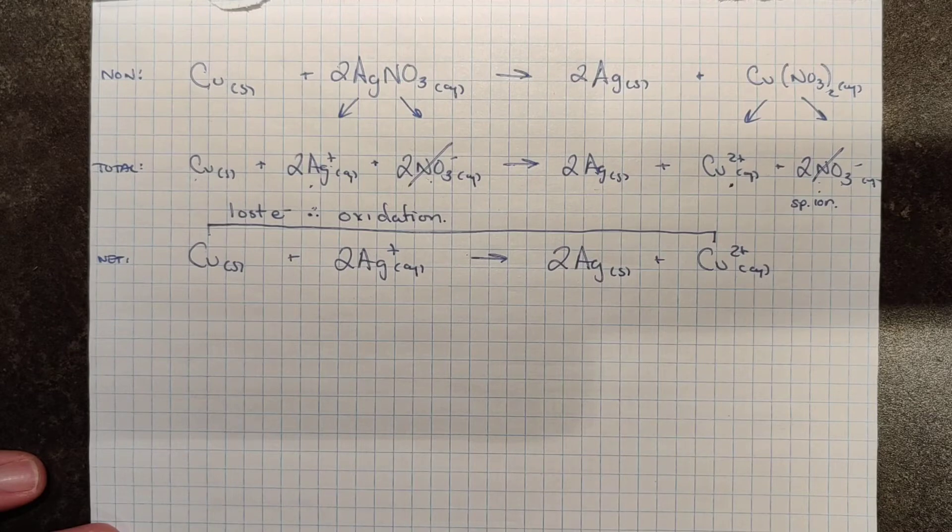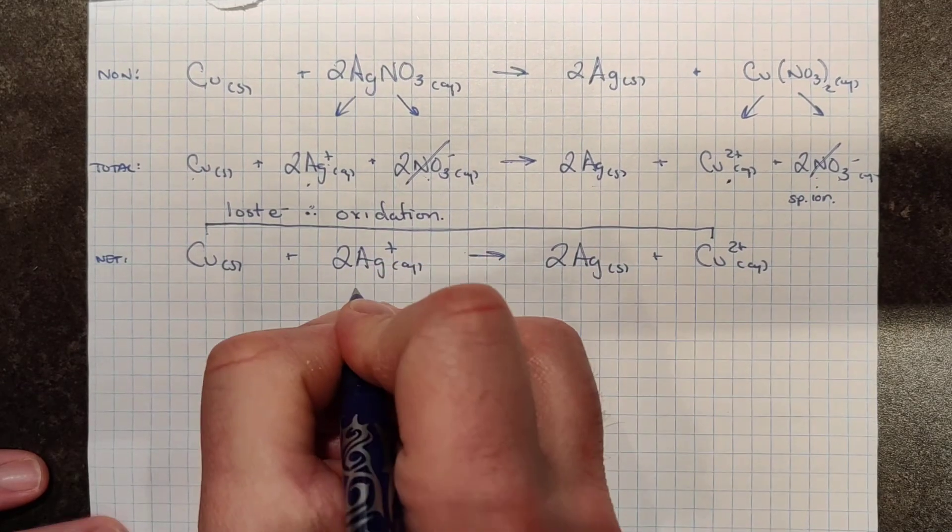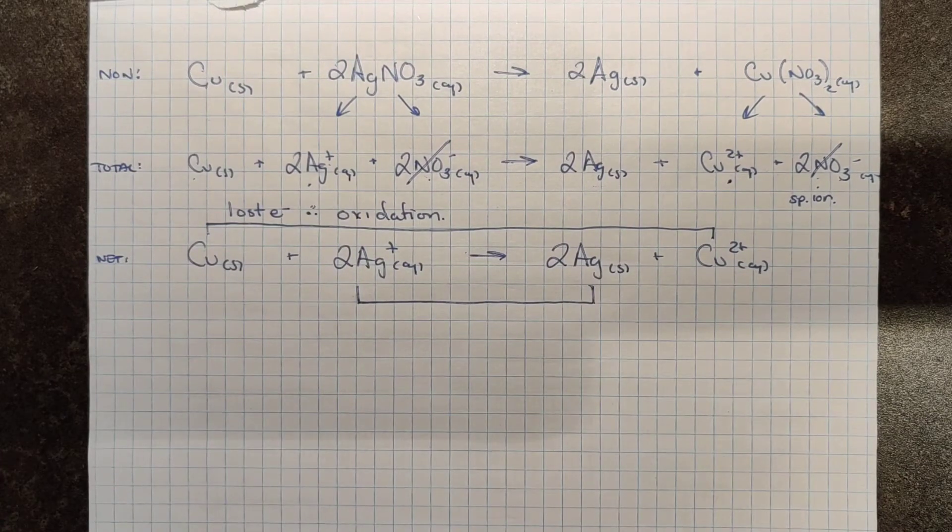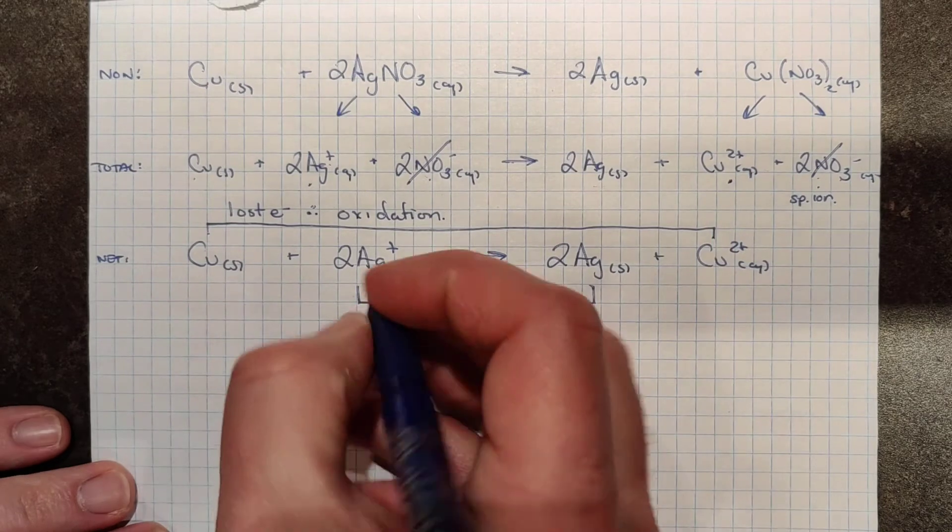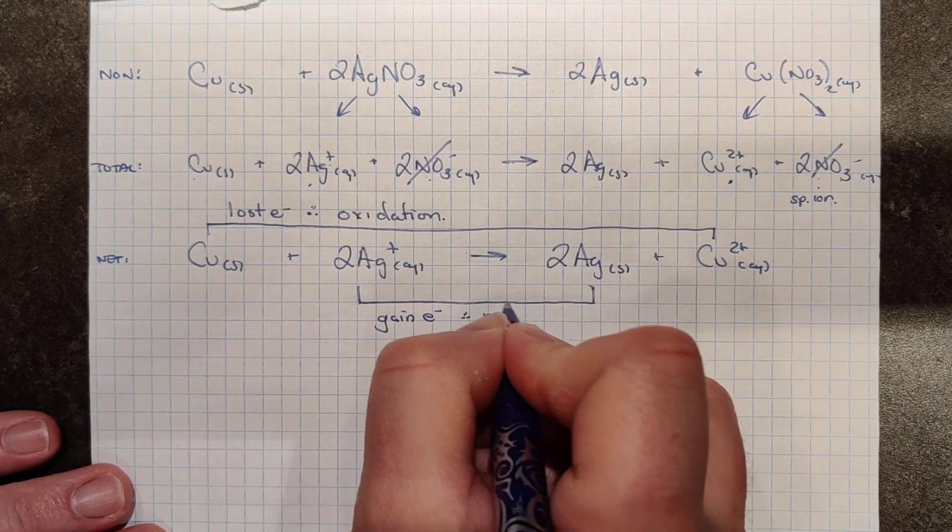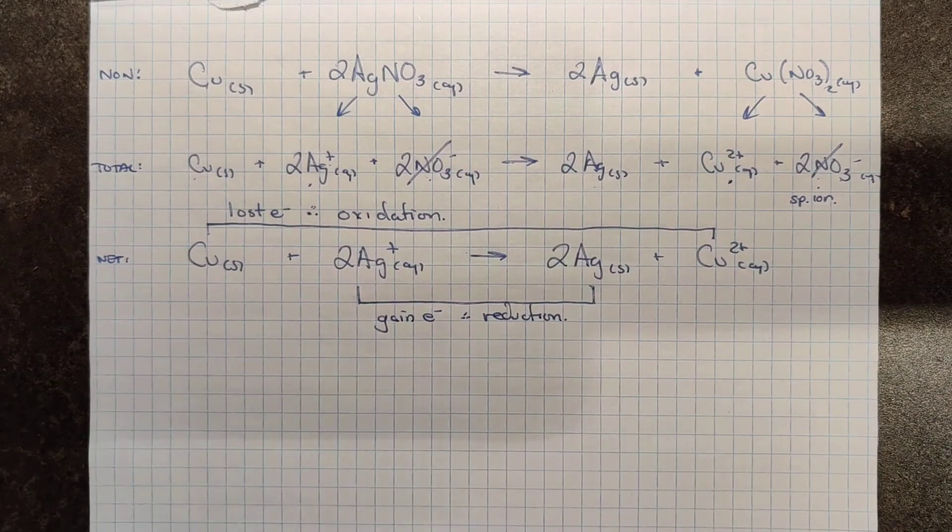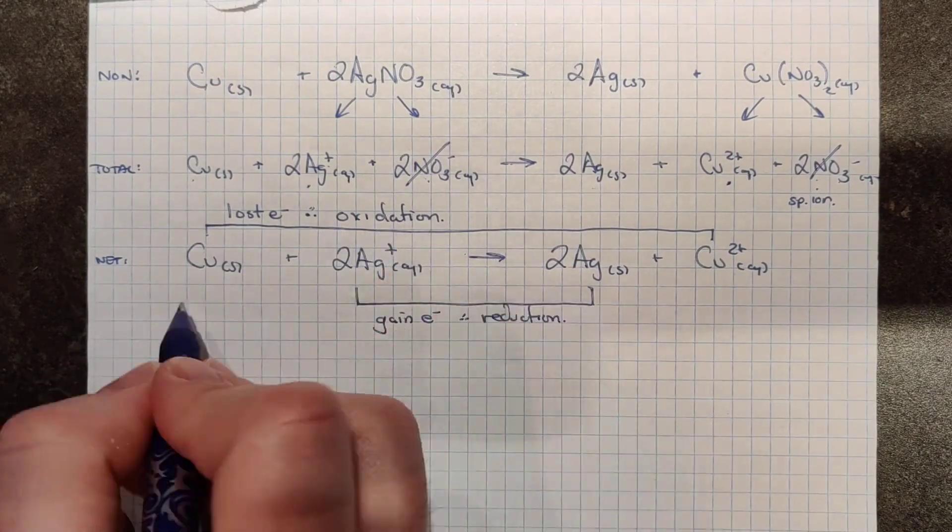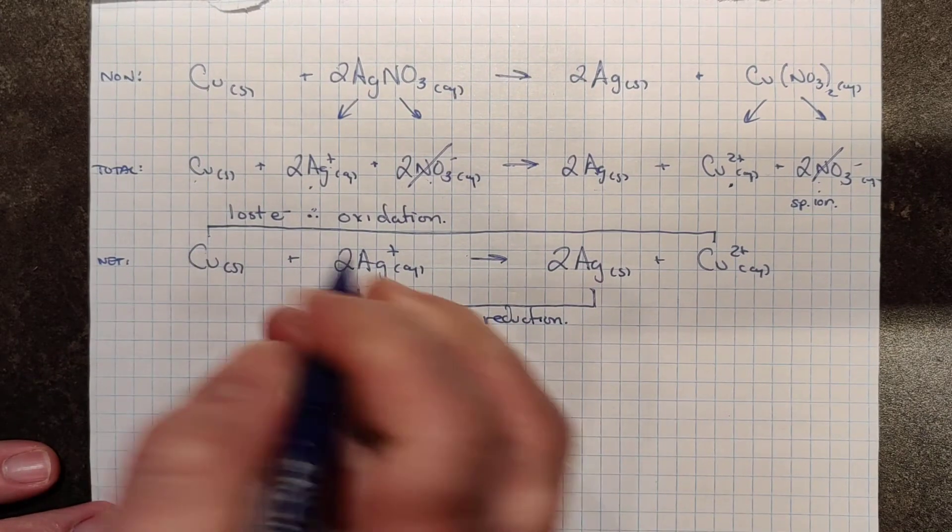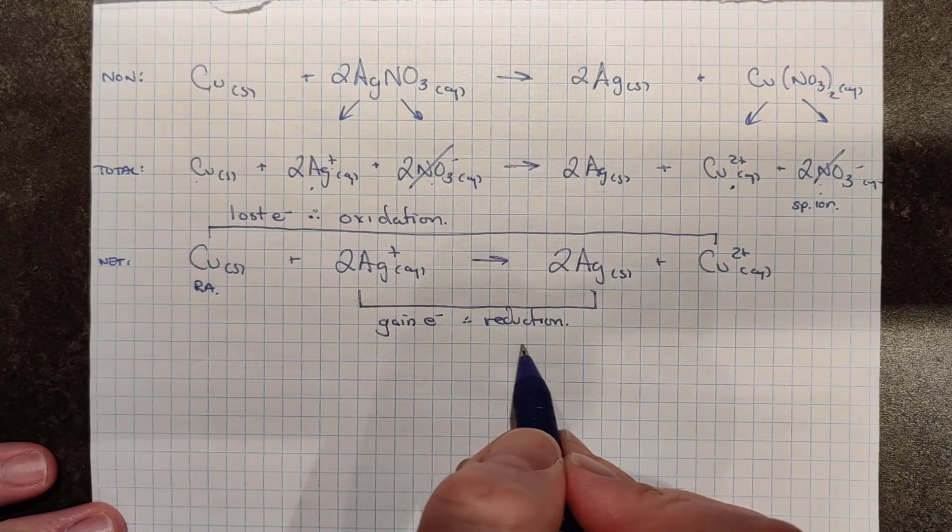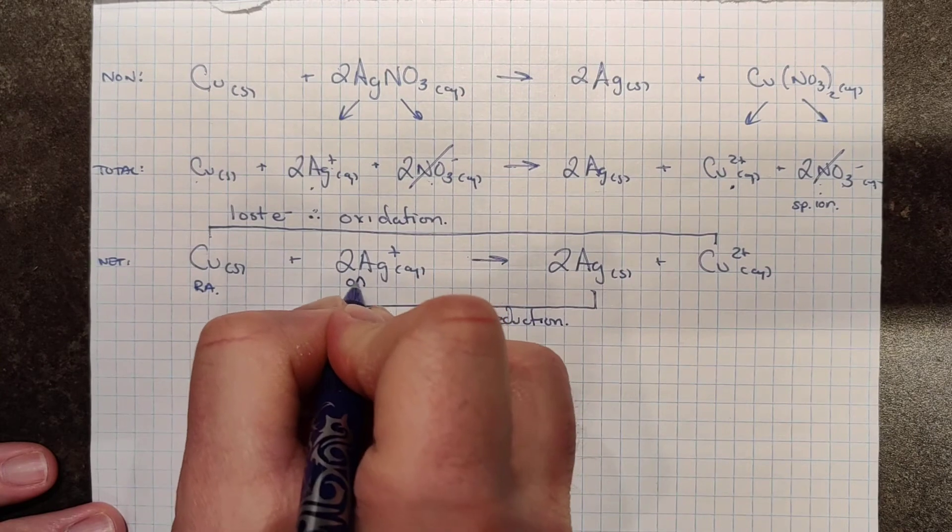Well, if it lost those electrons, where the heck did they go? Take a look at silver. Silver starts out as a 1 plus and finishes as neutral. If I'm a plus 1 charge, then I'm going to have to gain a negative charge or an electron in order to become neutral. And so silver is gaining these electrons and therefore is undergoing reduction. So copper lost electrons and was oxidized. Therefore, it was the one that was responsible for silver getting reduced. So I might call it the RA. And silver undergoing reduction was therefore responsible for copper losing electrons and could be considered the OA.